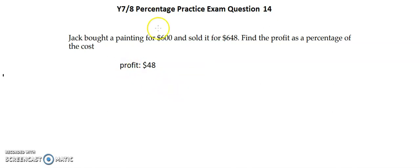If we're looking at percentage, find the profit as a percentage of the cost, that means we're doing profit over the cost which was $600.